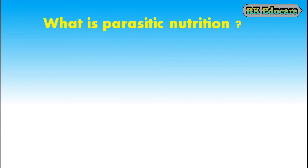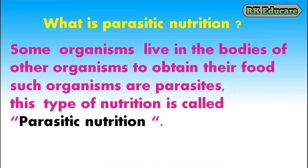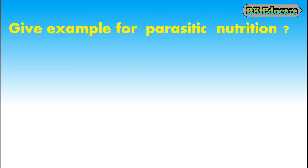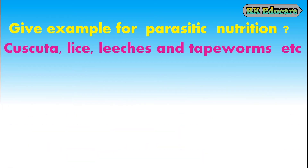What is parasitic nutrition? Some organisms live in the bodies of other organisms to obtain their food. Such organisms are called parasites and this type of nutrition is called parasitic nutrition. Examples for parasitic nutrition: Cuscuta, lice, leeches, tapeworms, etc.